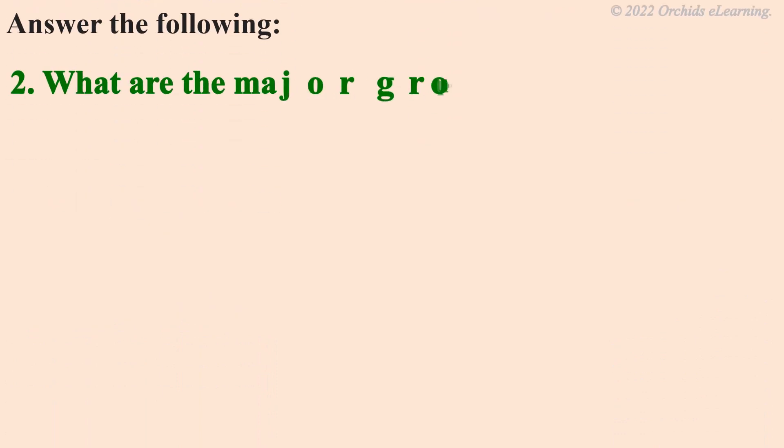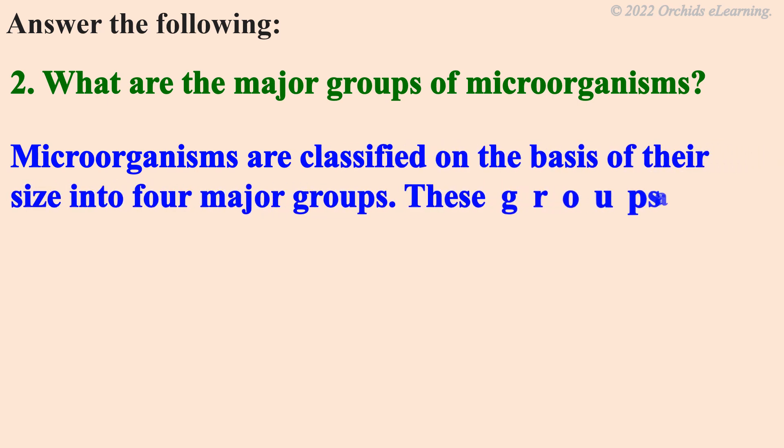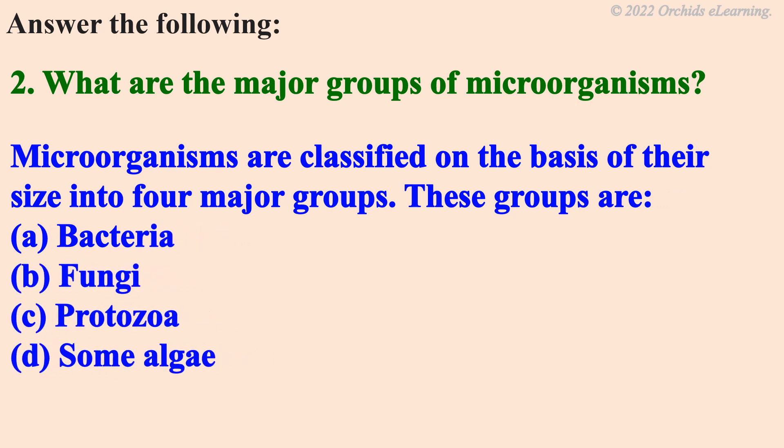What are the major groups of microorganisms? Microorganisms are classified on the basis of their size into four major groups. These groups are bacteria, fungi, protozoa, and some algae.